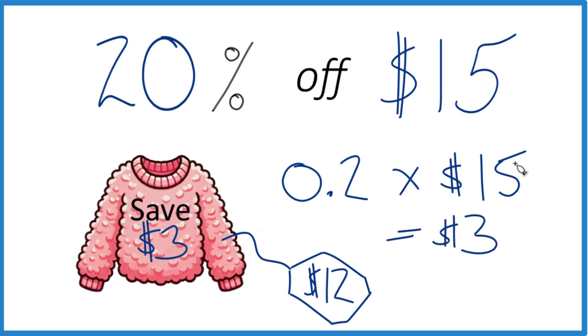Since it cost $15 originally, we subtract 3 — $12. That's how you take 20% off $15 on your bargain fuzzy pink sweater. This is Dr. V. Thanks for watching.